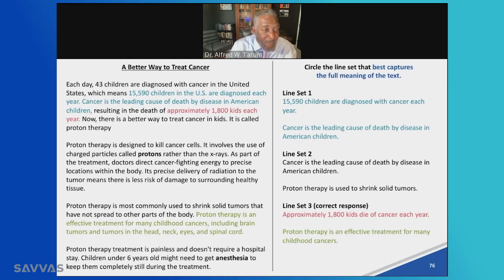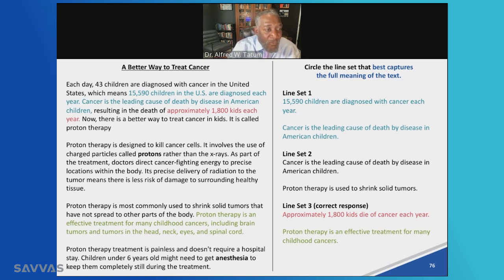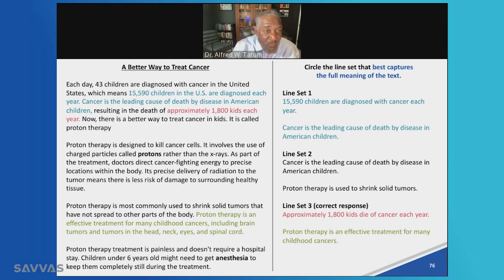Instead of just telling me what you think about it, I use what's called line sets — as discussed in my research. I had kids circle the line set that best captures the full meaning of the text. If a kid chose line set one, I know they were only paying attention to the first paragraph where you see the same color. Line set three indicates — if you look at the colors — that my students are paying attention to the beginning, middle, and end of the text if they come up with the correct response. This is how I assess reading comprehension.